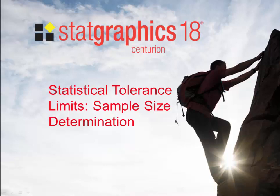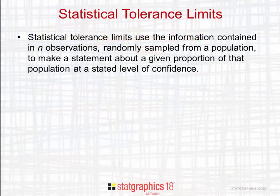This video describes methods for determining adequate sample sizes for estimating statistical tolerance limits. Statistical tolerance limits use the information contained in N observations randomly sampled from a population to make a statement about a given proportion of that population at a stated level of confidence.